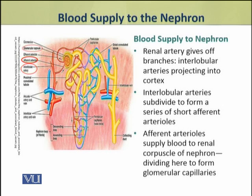In the nephron, the afferent arterioles divide further to form a network of glomerular capillaries.